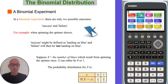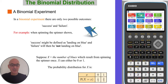For example, when spinning the spinner shown, success might be defined as landing on blue with a probability of three quarters. Failure will be not landing on blue — in other words white — with a probability of one quarter. If X is the number of blues which result from spinning the spinner once, X can have the values zero or one. The probability distribution is shown at the bottom.